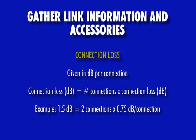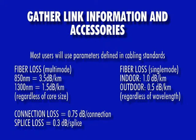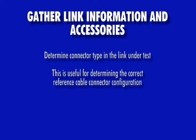Connection loss is the number of connections multiplied by the dB loss per connection. Splice loss is the number of splices multiplied by the dB loss per splice. Most users will follow the fiber, connection, and splice loss specified in cabling standards such as the TIA 568. It is also helpful to determine the connector type used in the link under test, which will help determine the right reference cable configuration to use.